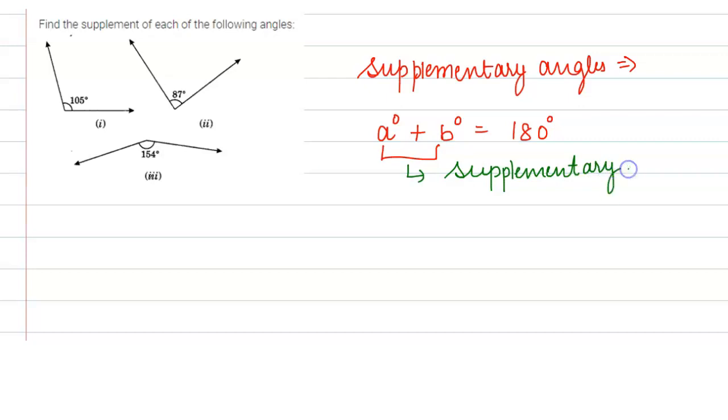Right, so in this question we need to find the supplement of these angles. So one of the angle is given to us, we need to find its supplement. So how can we do this? Simply by subtracting the given angles from 180.